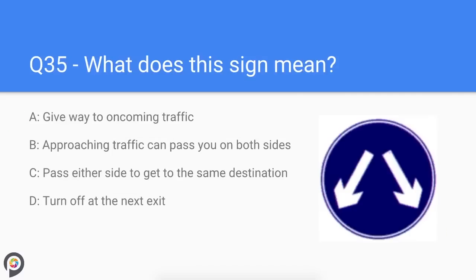Question thirty-five: what does this sign mean? You can pass either side to get to the same destination. Very often these signs are found on yellow bollards and in runway streets.